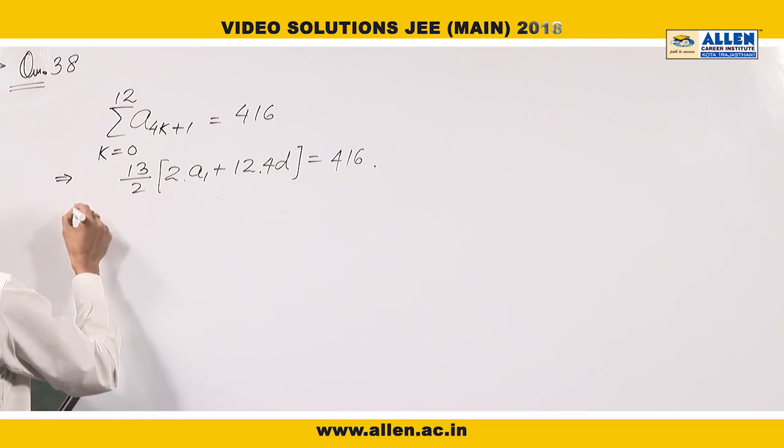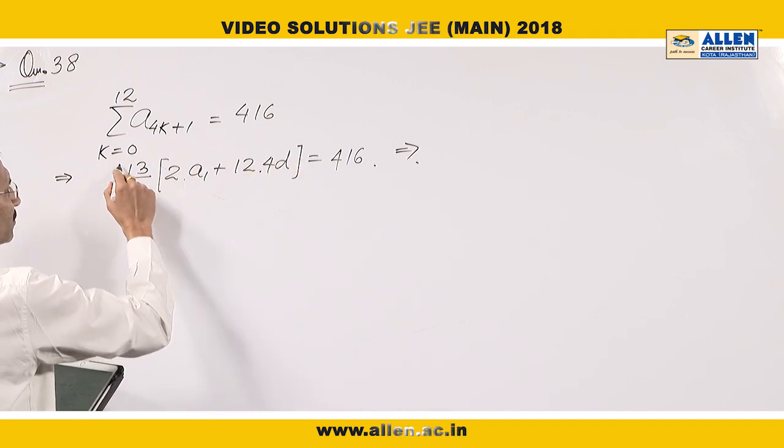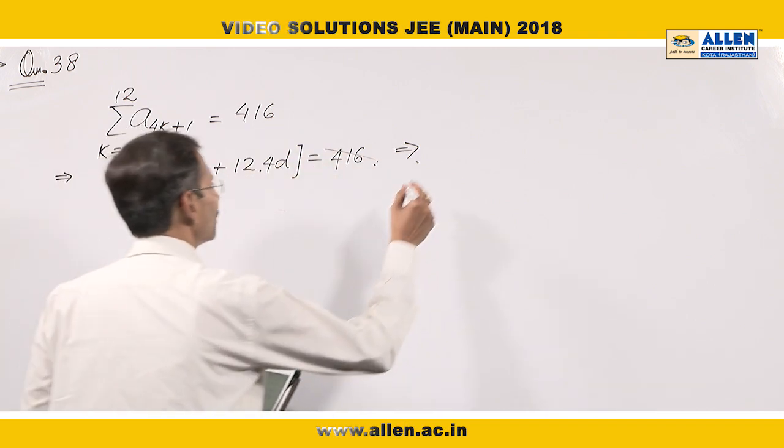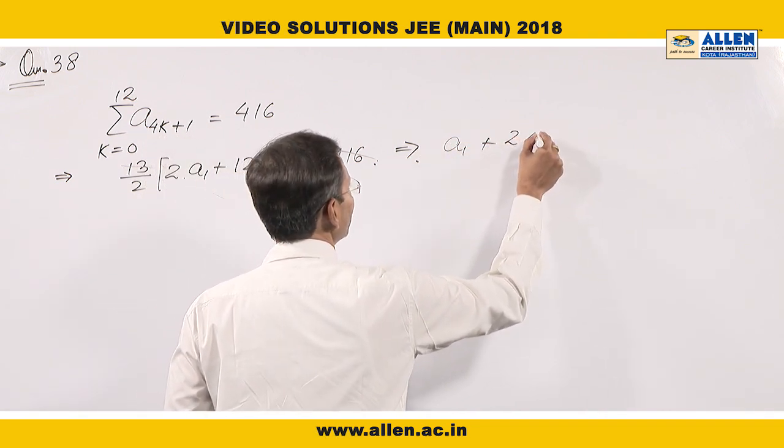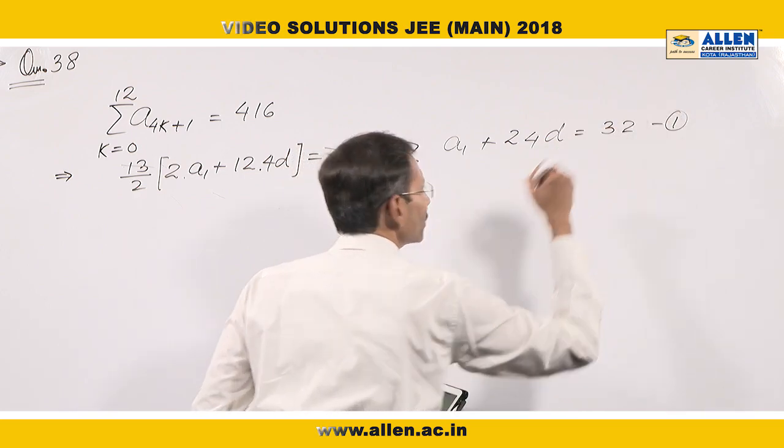Now by solving this, we can cancel 13. 416 by 13 is 32 times. So a₁ + 24d = 32. Let us say equation 1.